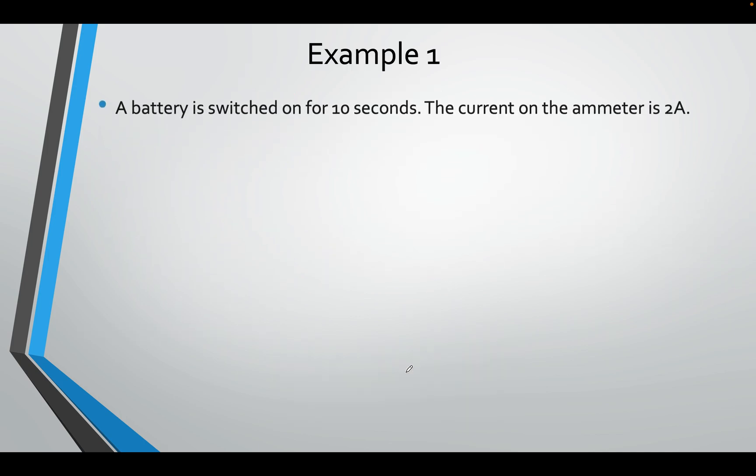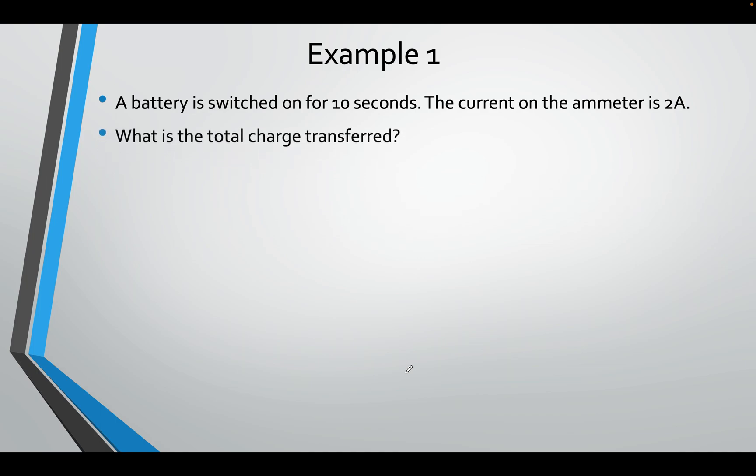A simple example. Battery switched on 10 seconds, current is 2 amps. What is the charge? Well, we know the current is 2, we know the time is 10, we don't know Q. We know the formula, Q equals IT. Put the numbers in, 2 times 10, 20 coulombs.